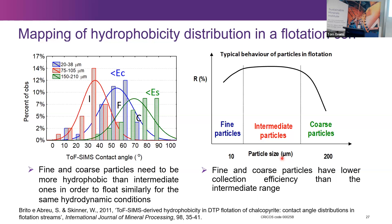Another comment raised: in the comminution and breakage space, these techniques could be used to accurately map what is going on at grain boundaries — something we really haven't done before. Very little is known about what goes on at grain boundaries, and it's also really important in the exploration space when it comes to weathering of rocks releasing particles into the water column. We look forward to getting the new machine in December.